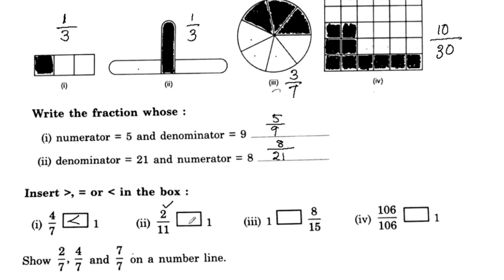So, 2 by 11 is less than 1. Next, 8 by 15 is a proper fraction, so this is less than 1. Now, 1 is greater. So 106 by 106 equals 1.